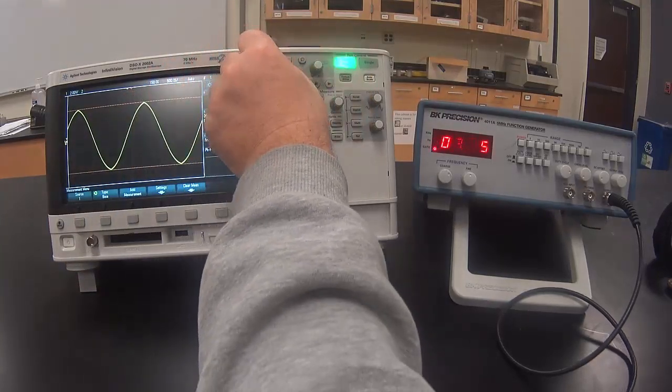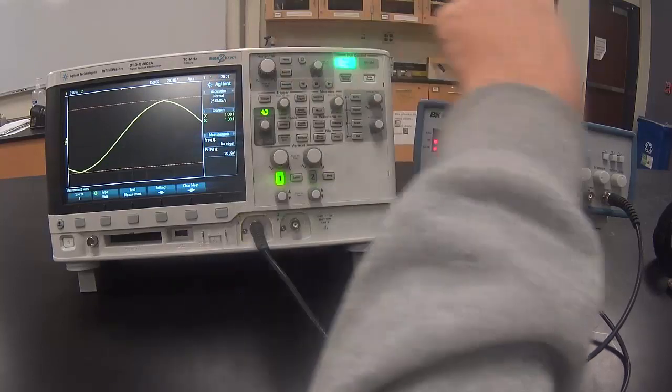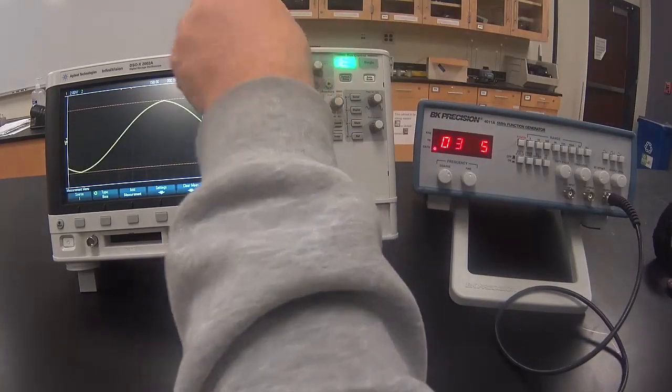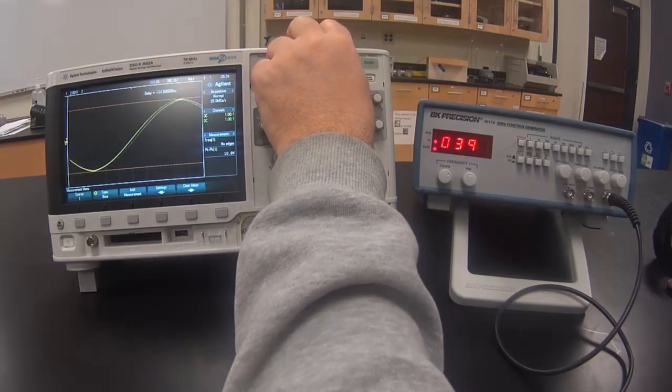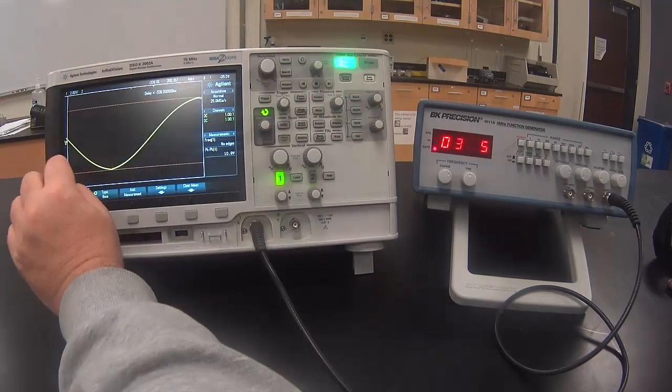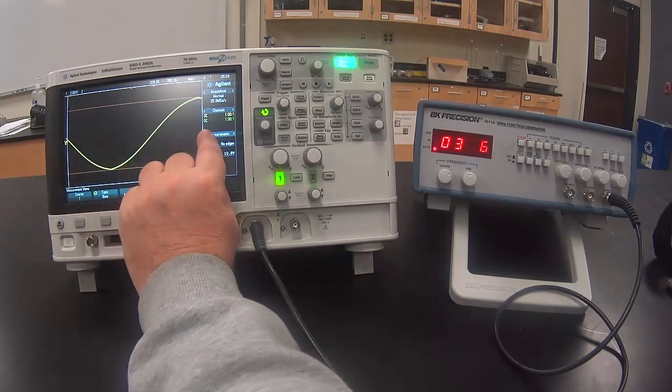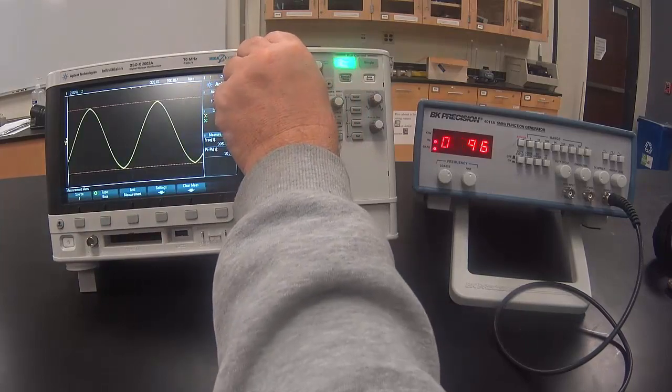I want to stretch out the signal in time as far as I can. And yet I still want to have at least one whole wave on the oscilloscope. This setting is less than a whole wave, and there's a whole wave.